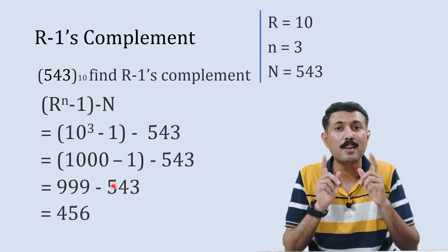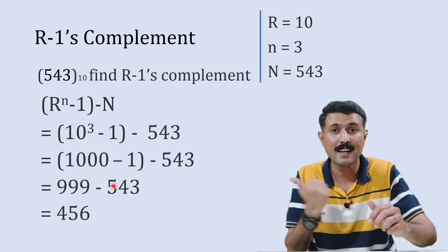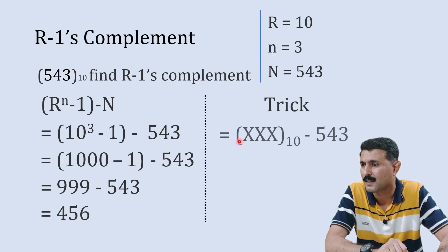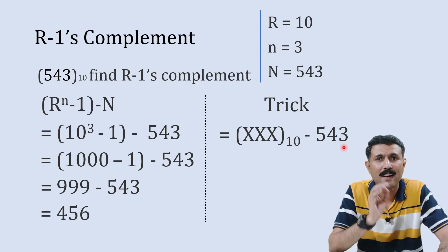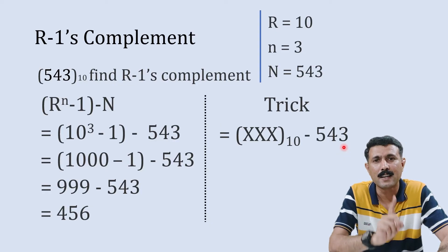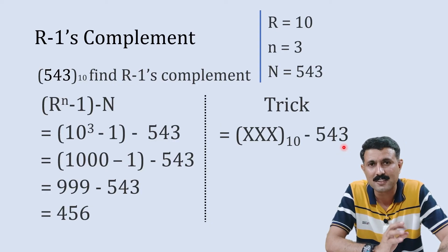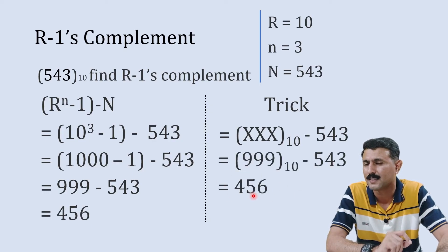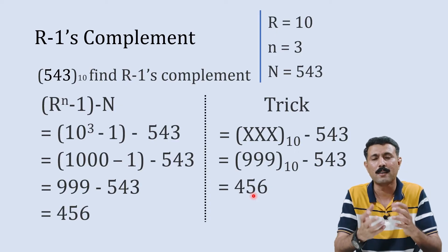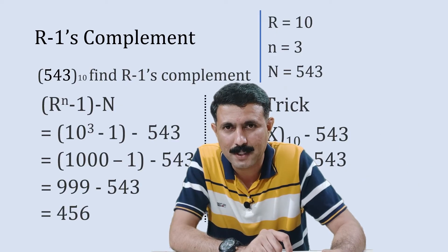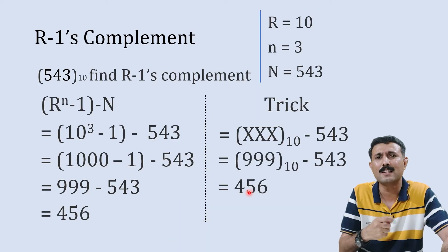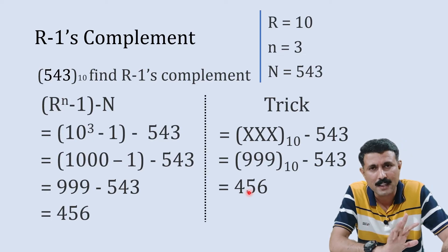The trick for r-1's complement is even simpler. Write the largest digit repeated — 999 — and subtract 543 directly. The answer is 456, the 9's complement, obtained in one step without needing to add 1. This trick is very quick for calculating r-1's complement in any number system.